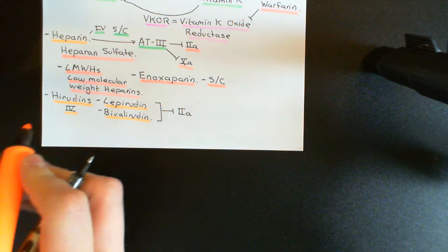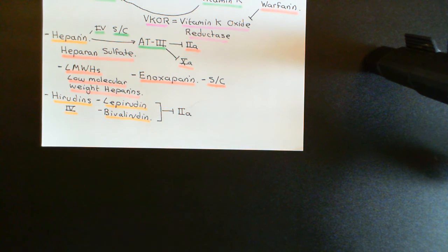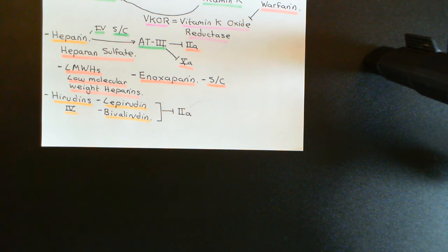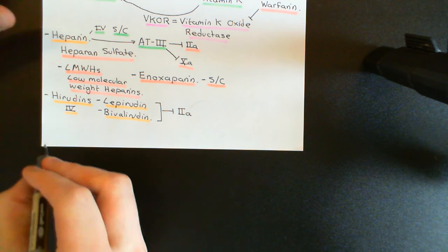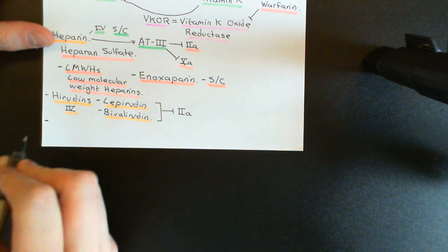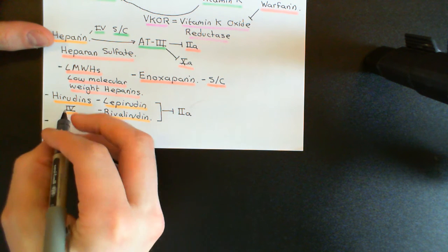Other drugs work by just inhibiting an active coagulation factor. One more is going to work by inhibiting thrombin, and another is going to work by inhibiting activated factor 10, and therefore also is going to close off both the intrinsic and extrinsic coagulation cascade and prevent the production of a fibrin mesh. These two are not going to be hiridins, and they're going to be givable by oral means.